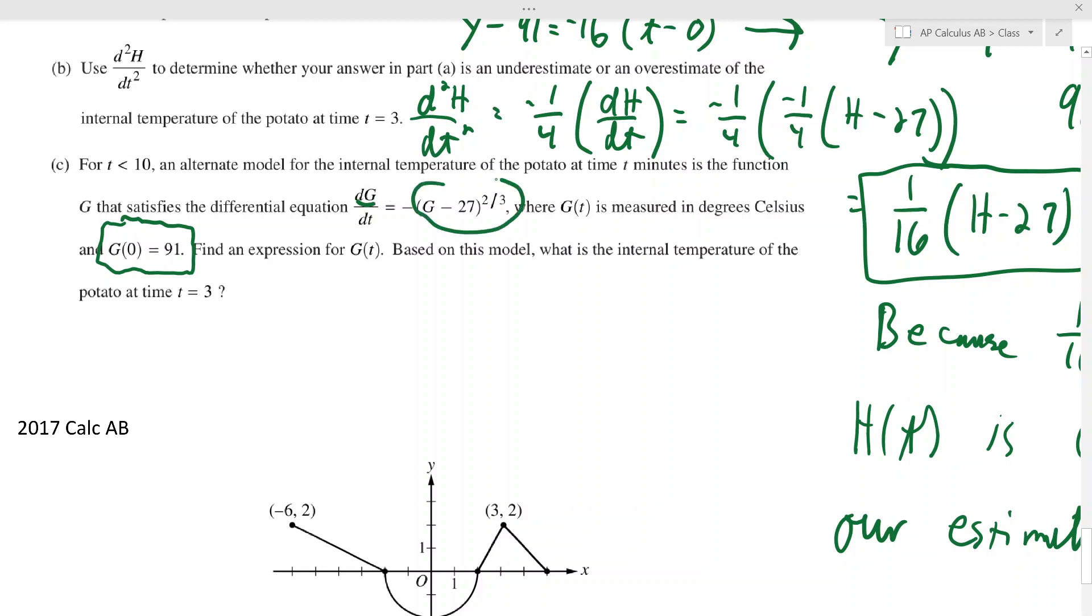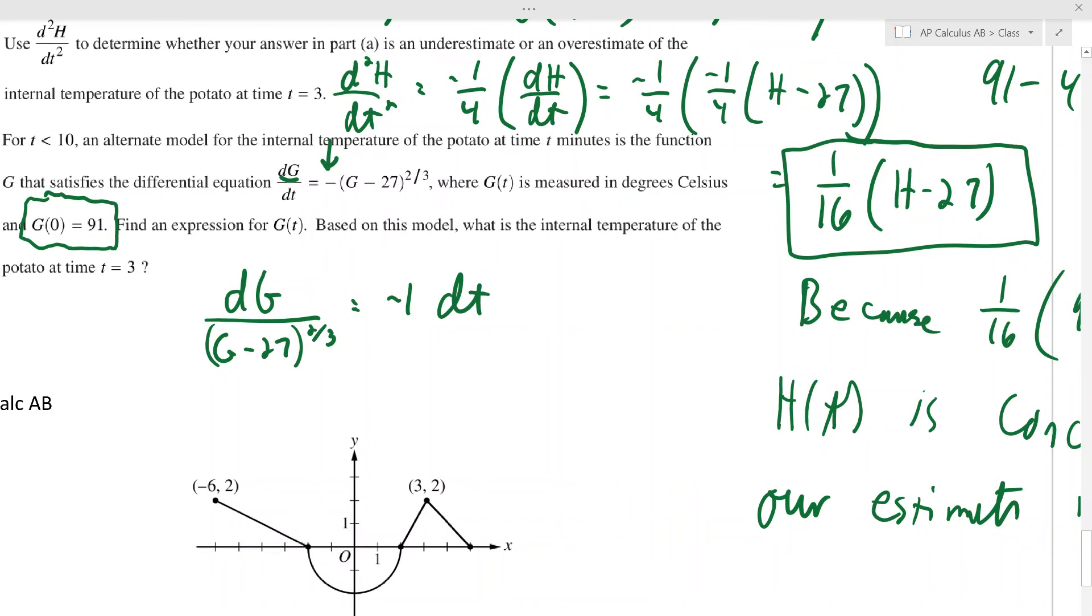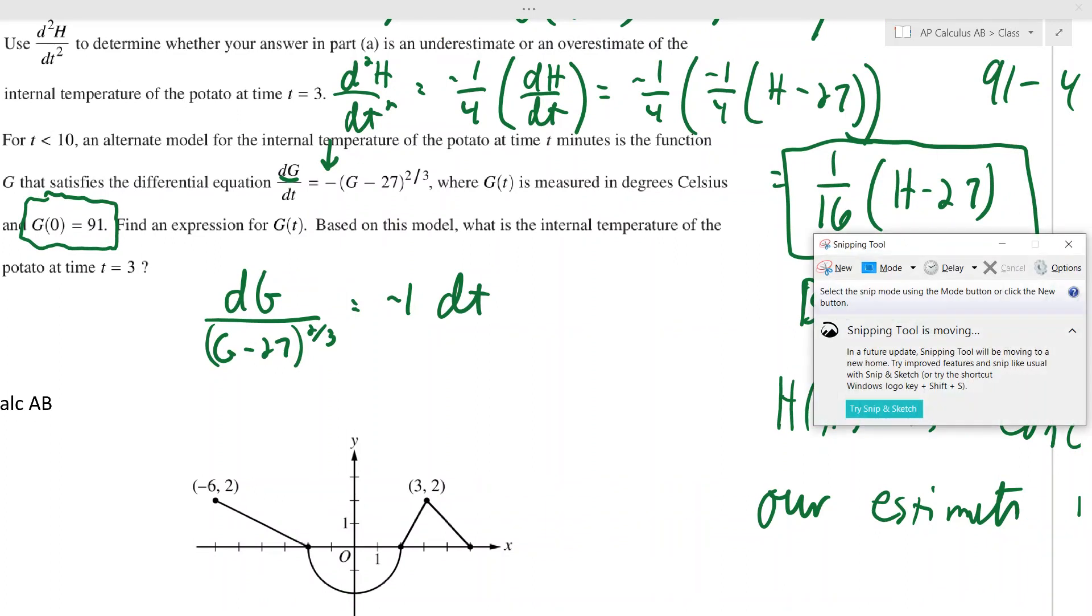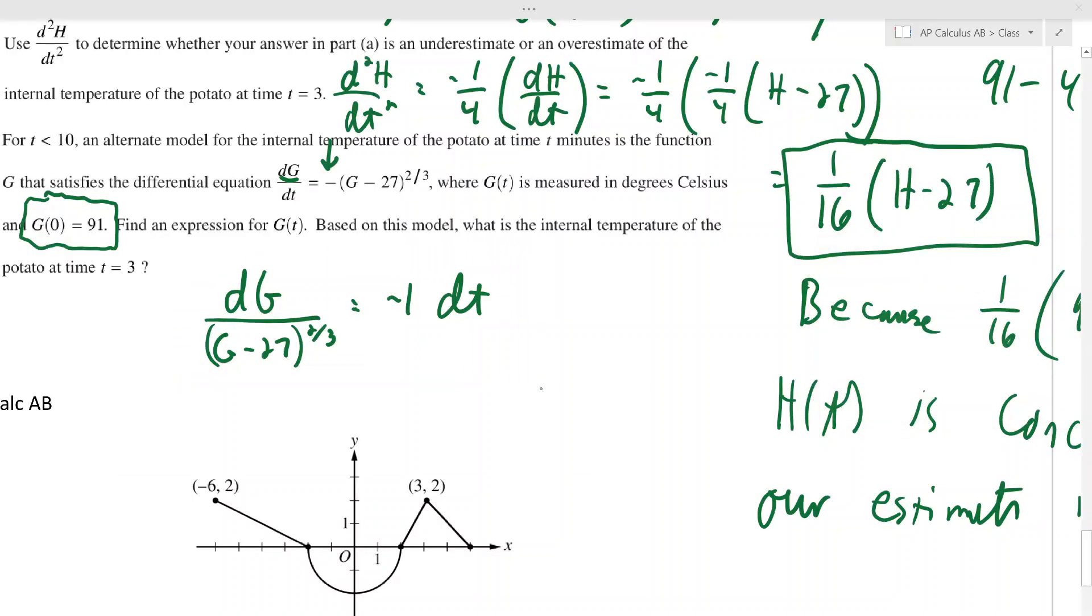And G is in this over here. I'm going to separate that out. And when you do that, it should look like this: dG over (G minus 27) to the two thirds is negative dt. So there's a negative over here and you could take that with like, you could put the negative here and make this just like a one, but you don't need to do it. There's no point in moving the negative because you got to solve for G anyway. Now I'm going to move that somewhere else just so I have a little bit of more room to work.